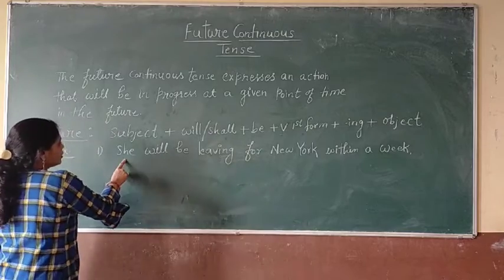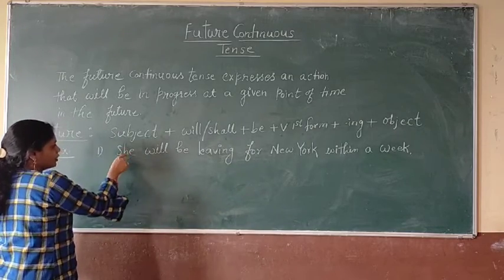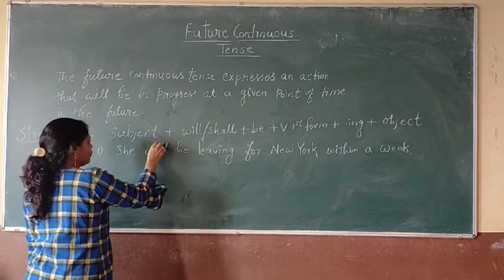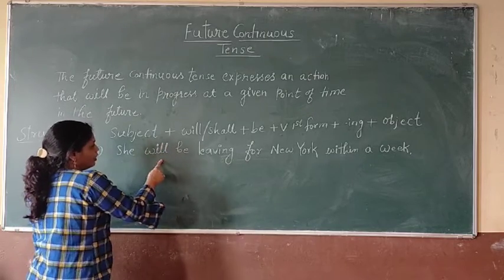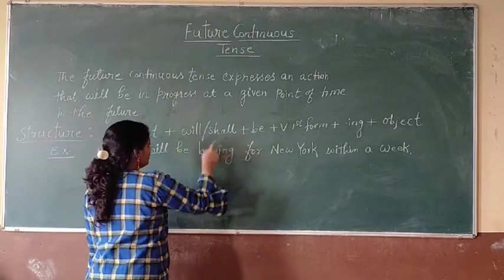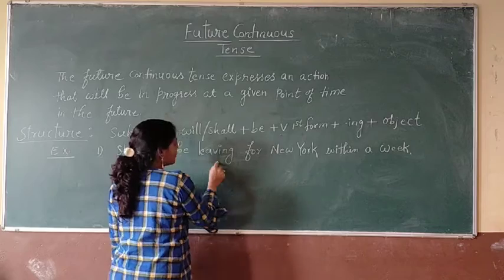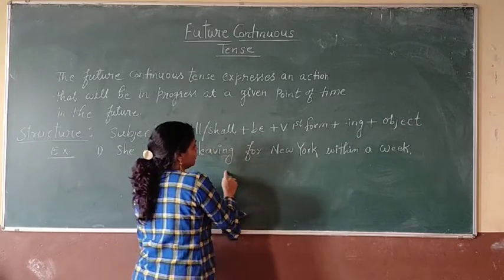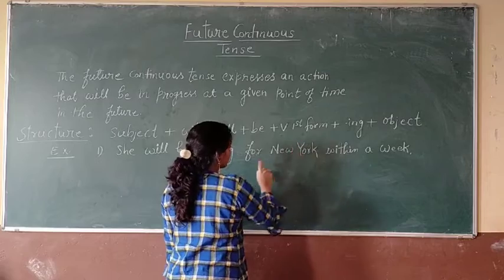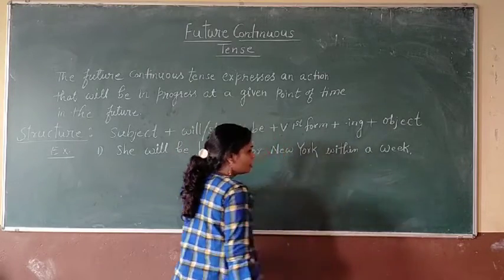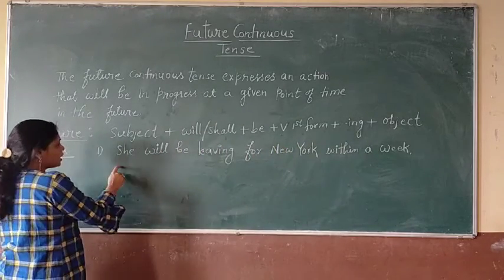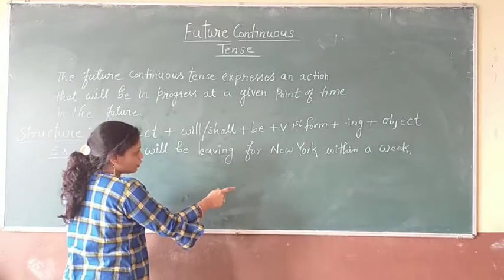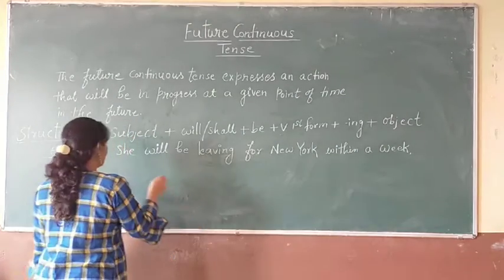Let's see this example. 'She' — here 'she' is the subject. Then after 'she' we use 'will'. She will, then 'be', then the verb with -ing and the object. She will be living for New York within a way. Simple.